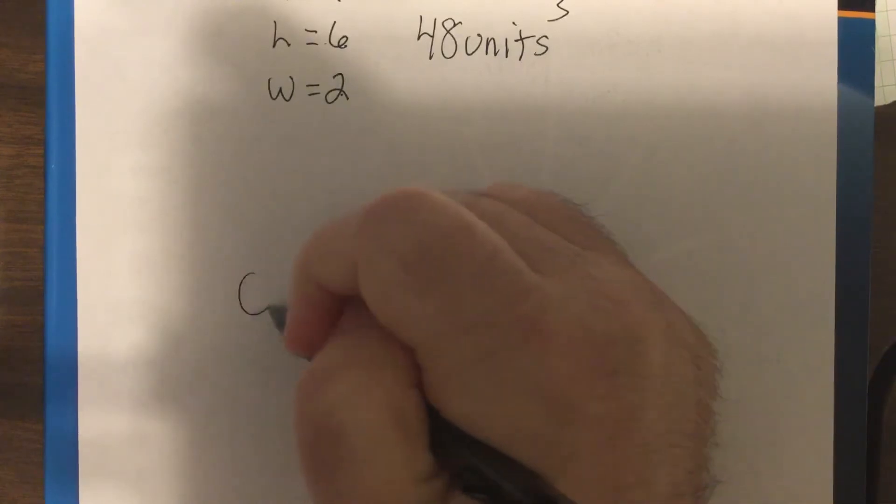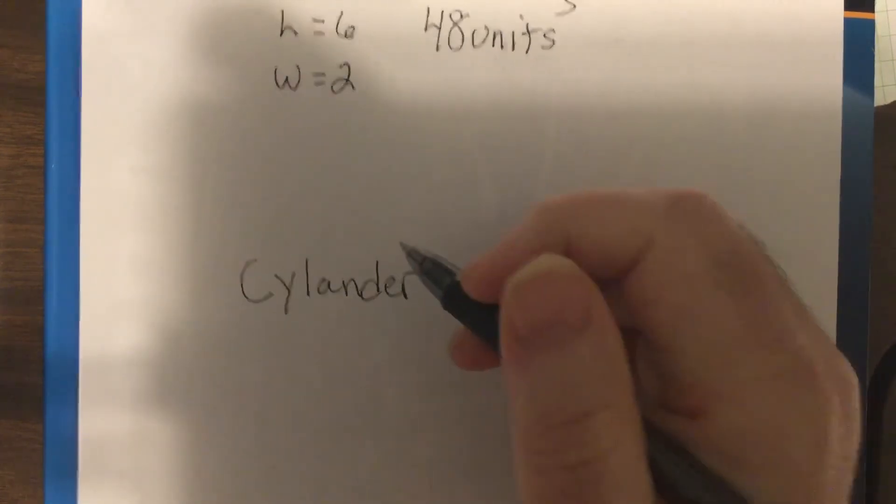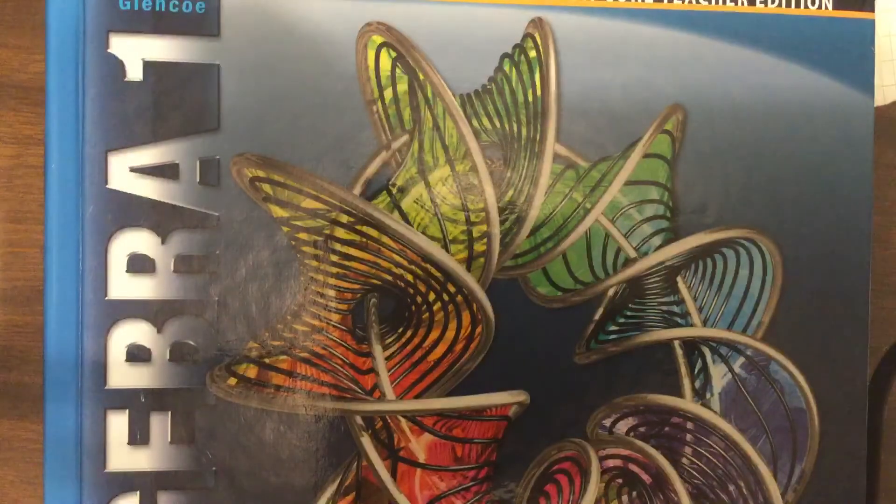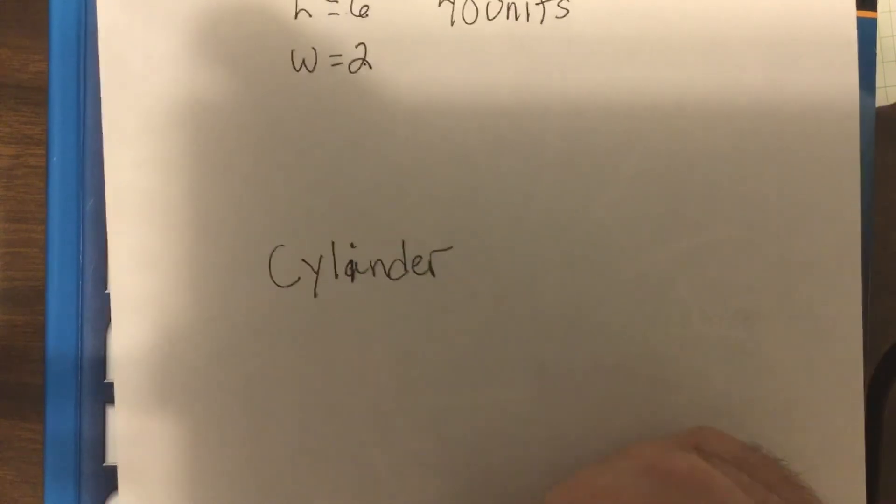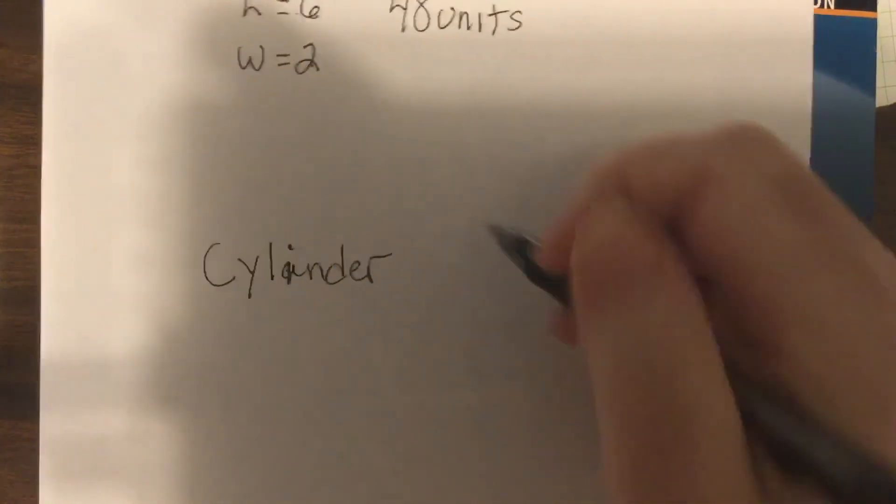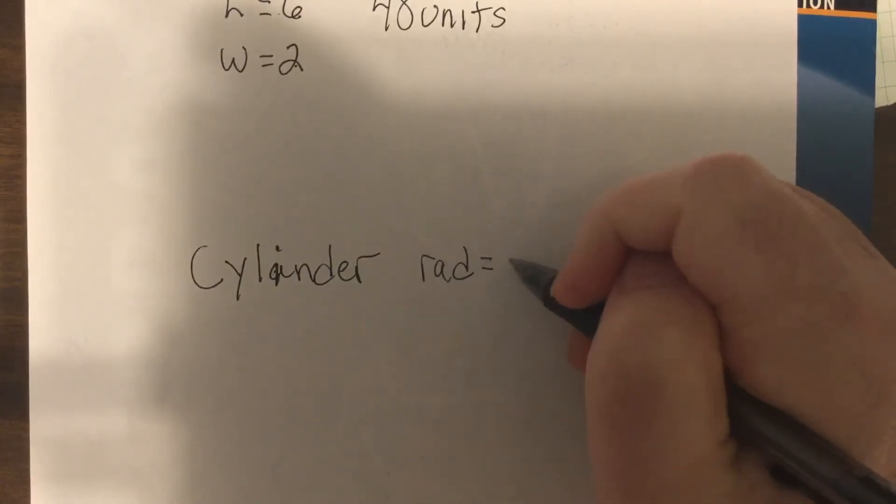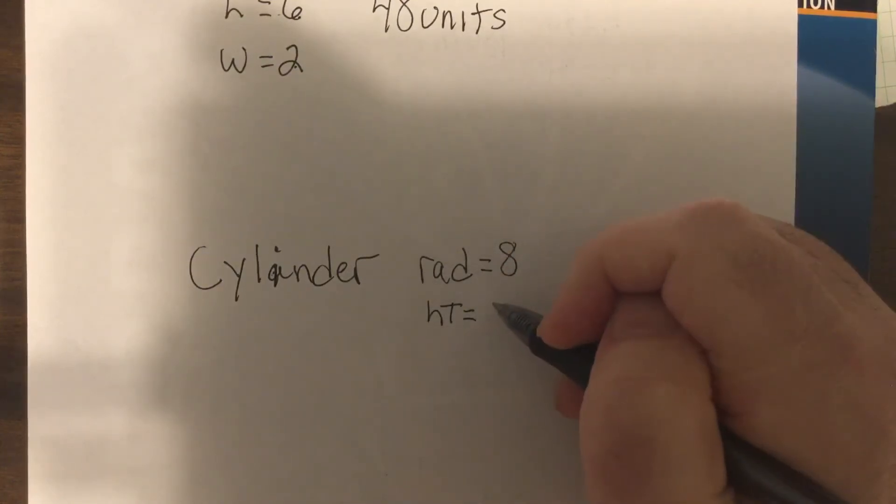And what if we have a cylinder—I think I spelled that wrong. Oh, I did spell it wrong. Oh my goodness, I'm so embarrassed. Cylinder, let's say it has a radius of 8 and a height of 2.